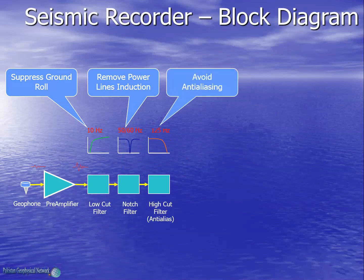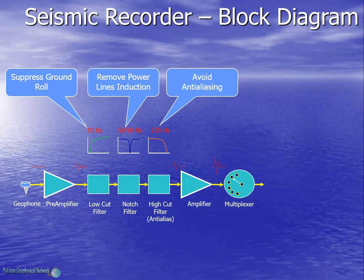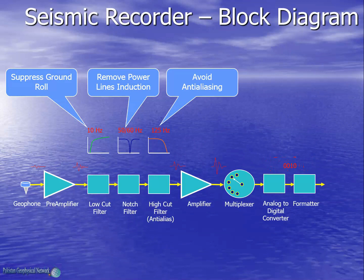Finally we have the anti-aliasing filter, usually set to half of the Nyquist frequency. Once the data has been filtered, it is further amplified. Then we have the multiplexer, which is an electronic switch that one by one connects each seismic channel to the analog to digital converter for digital conversion. After conversion into digital form, the data is formatted in some seismic format and finally written on the media.